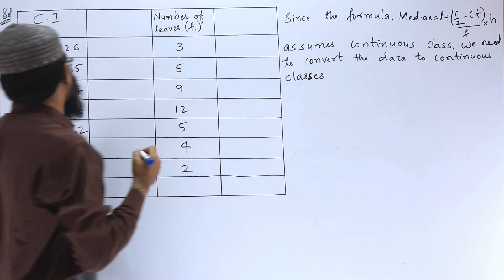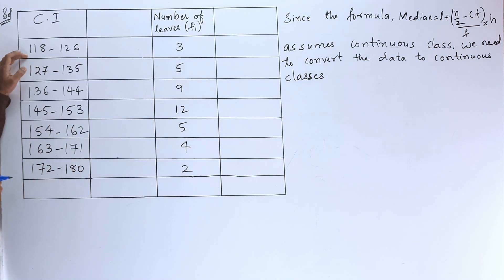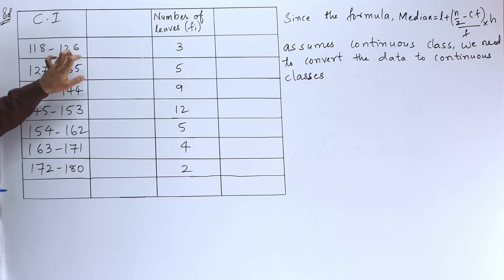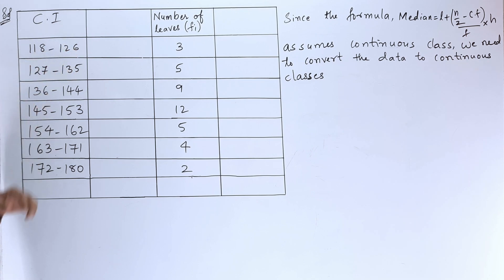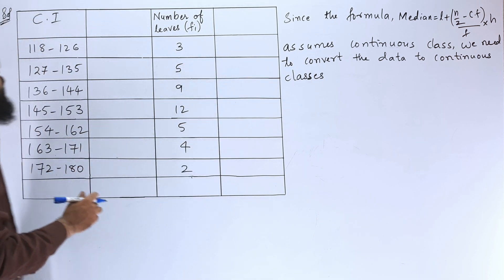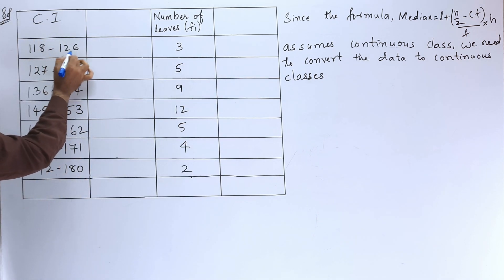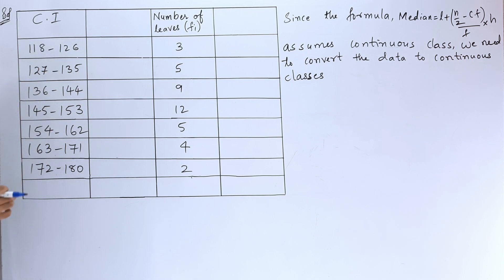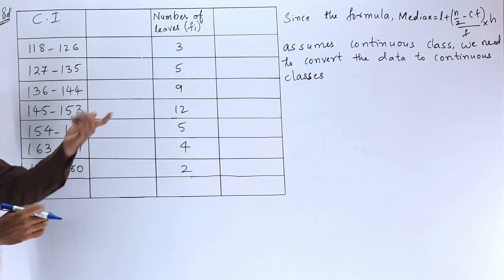As we can see here, 118 to 126 and here the both numbers, this is the upper limit and lower limit, both are not same. That's why this is not a continuous class. But for finding the median, we have to use continuous classes. Now let us convert this data into continuous classes.